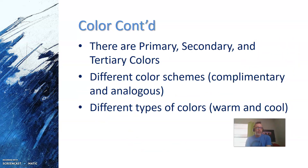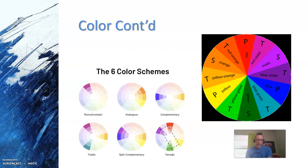There are primary, secondary, and tertiary colors. Most of the colors that you will find in a Crayola crayon box will be tertiary colors. There are also different color schemes, for example complementary and analogous, and different types of colors such as warm and cool. Here is an example of the six color schemes: monochromatic — using only one color in all of its different shades and tones — analogous, complementary, triadic, split complementary, and tetradic. Here is a simple color wheel showing the most basic primary, secondary, and tertiary colors that exist.